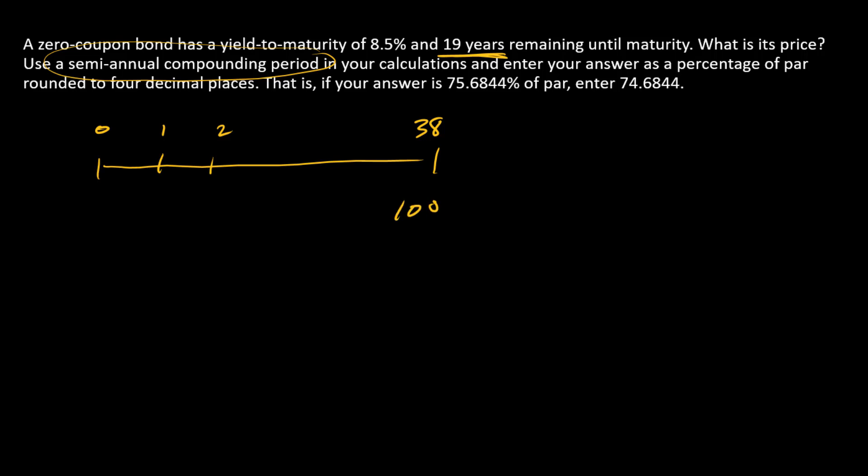Our only cash flow is just 100 out here at time 38. So we just need to find its present value.